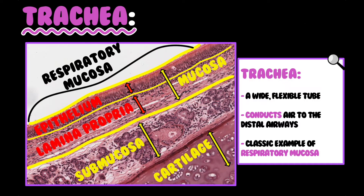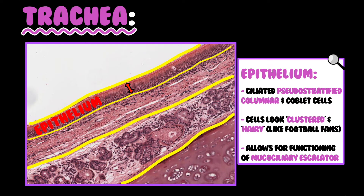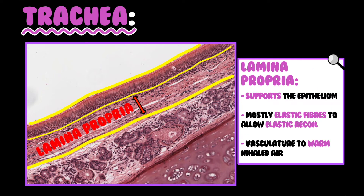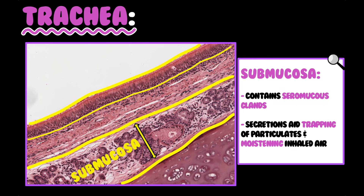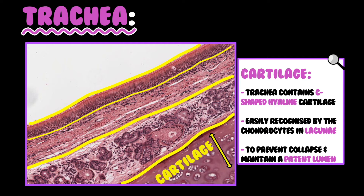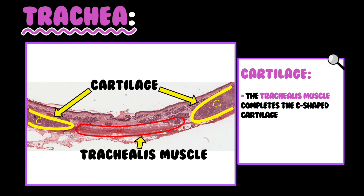The trachea is a wide flexible tube that conducts air to the distal airways and is a classic example of the respiratory mucosa. It is composed of mucosa, submucosa, and cartilage. The epithelium is ciliated pseudostratified columnar with goblet cells — the cells look clustered and hairy, like football fans — allowing functioning of the mucociliary escalator. The lamina propria supports the epithelium and contains mostly elastic fibres for elastic recoil and vasculature to warm inhaled air. The submucosa contains seromucous glands, aiding secretions, trapping of particulates, and moistening of inhaled air. The trachea contains C-shaped hyaline cartilage, easily recognised by chondrocytes and lacunae, which prevents collapse and maintains a patent lumen. The trachealis muscle completes the C-shape.